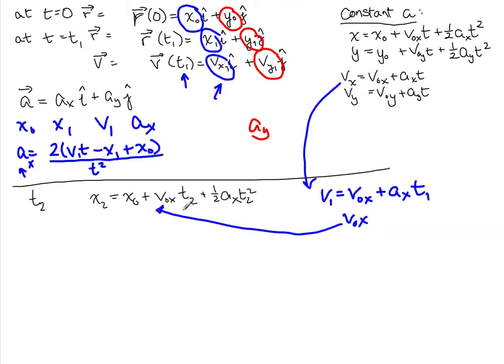Now that I have v0 in the x direction, I always had x0 here. I found a sub x from the first part. All I have to do is plug in the t's to get x2. And then I do the same thing to find, with all of the y information, to find the y2 with all that same stuff.